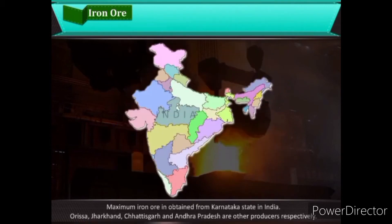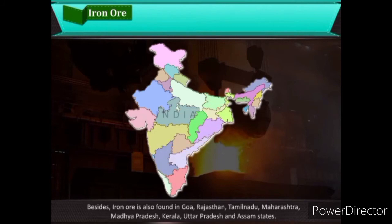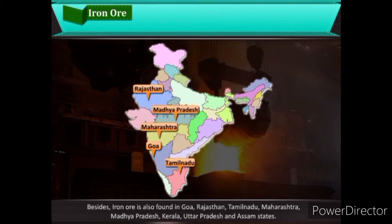There are four types of iron ore found in India: hematite, magnetite, limonite, and siderite. Maximum iron ore is obtained from Karnataka state. Orissa, Jharkhand, Chhattisgarh, and Andhra Pradesh are other major producers. Iron ore is also found in Goa, Rajasthan, Tamil Nadu, Maharashtra, Madhya Pradesh, Kerala, Uttar Pradesh, and Assam.